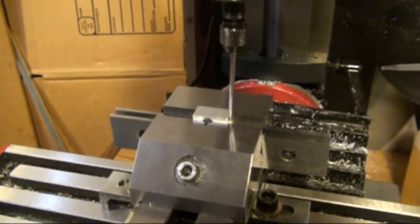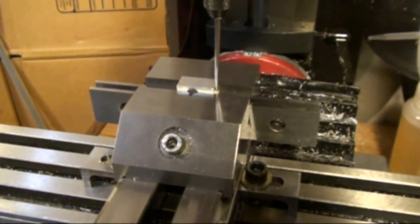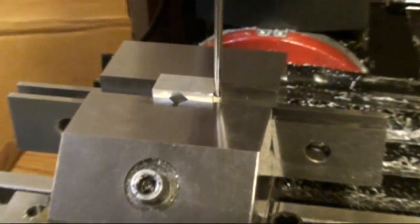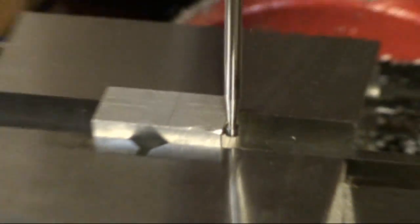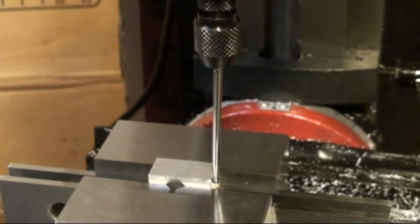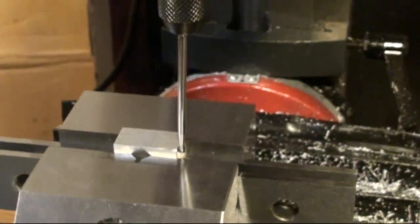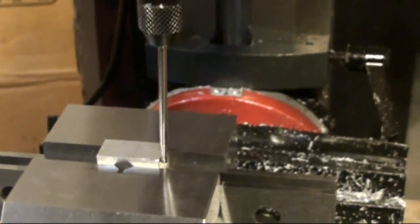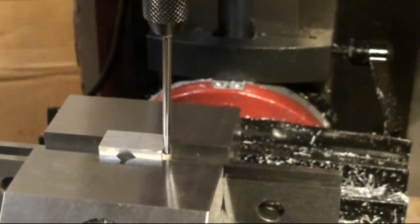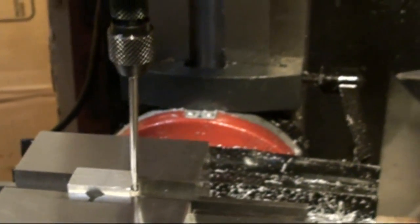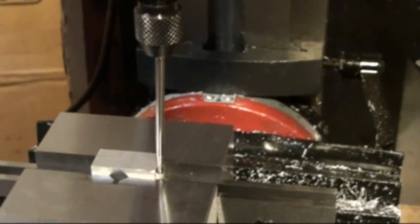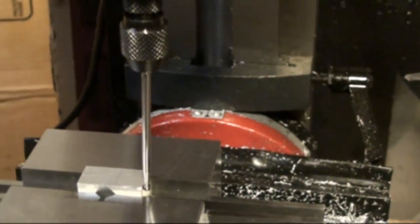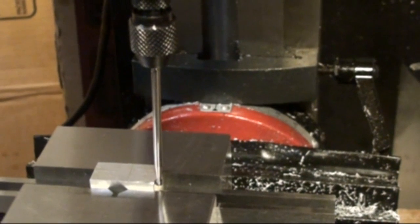Alright, now I'm going to show, I'm using the wiggler here to find the edge of the part that I'm going to be working on here today. Wiggler is just kind of a device to find either edges or the centers of scribe marks, things of that nature, by basically turning the table in until the wiggler stops wiggling. Here in a second I'll show you kind of what that looks like.